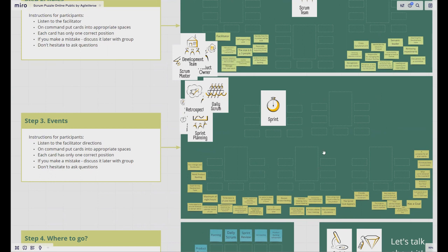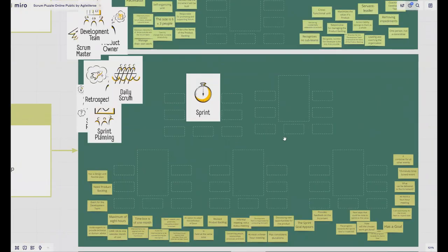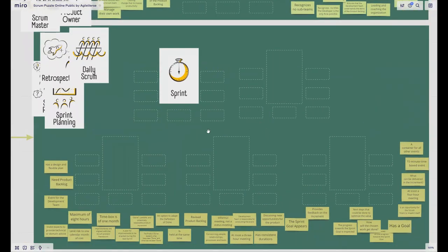The next section is Scrum events. It's pretty similar to the previous step. As you can see, you have several icons of the Scrum events, for example daily scrum, retrospectives, sprint planning, et cetera. As in the previous step, you should place as facilitator these in the bigger free spaces. After this, after discussing it with the group, as in the previous step, you should ask people to complete the puzzle.